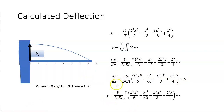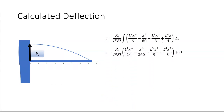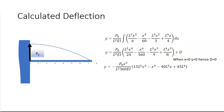Integrating the slope equation a second time gives the deflection: l²x⁴/24 minus x⁶/360 minus l³x³/9 minus p₀l²x²/8 plus a constant D. When x equals zero, y equals zero, so D is zero. This then becomes the equation for deflection at any point.